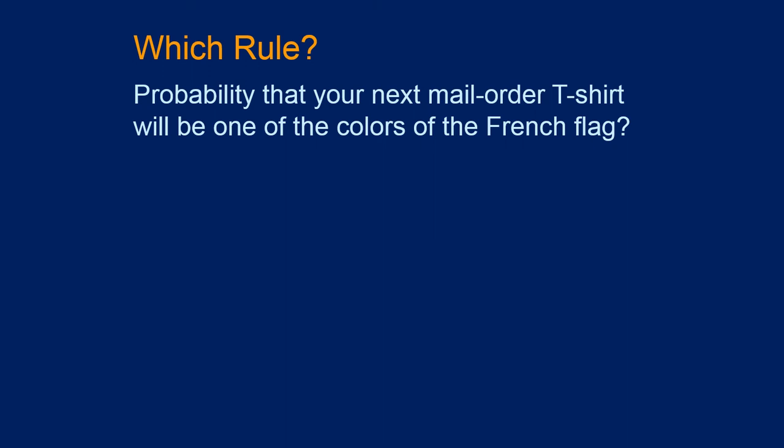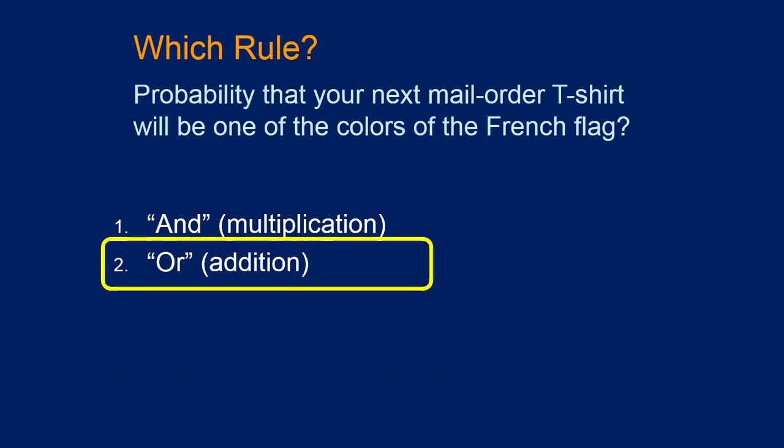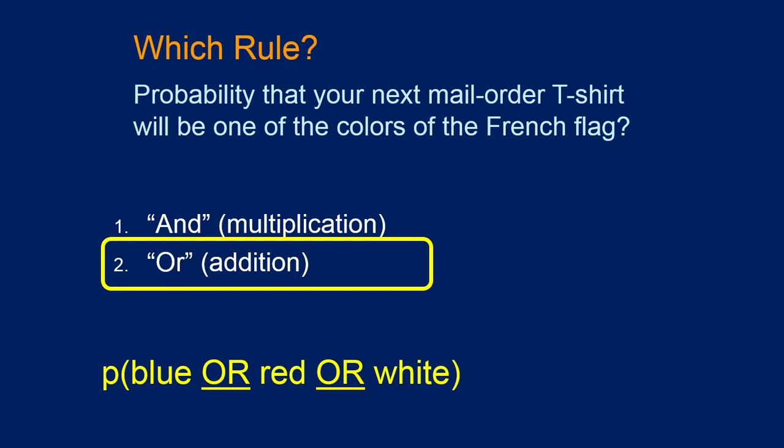Let's play 'which rule should you use.' You order a t-shirt with randomly selected colors — what's the probability it will be one of the colors of the French flag? You'd use OR, because it becomes: what's the probability of it being blue, or red, or white? If you know those individual probabilities, you check they're disjoint and add them together.